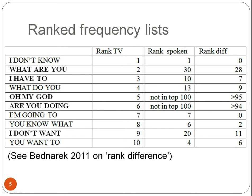So, to conclude, there are two key ways of comparing corpora of different size: normalised frequencies and rank differences. In addition, we can undertake what is called keywords analysis, but that is the subject of a different screencast.